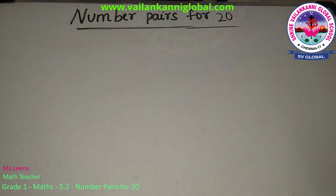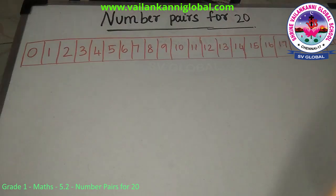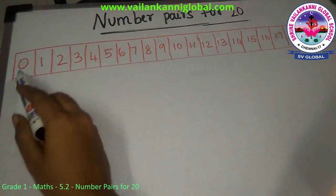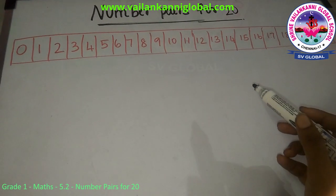Today we are going to learn about how to find number pairs for 20. To find number pairs for 20, we are going to write numbers from 0 to 20. As usual, we are going to start from 0.